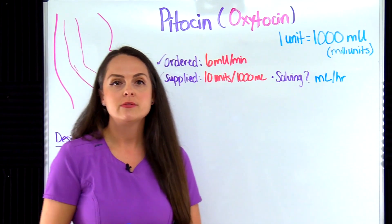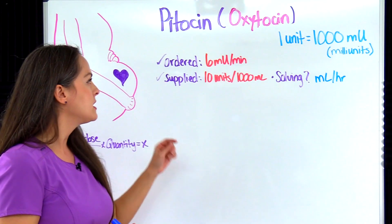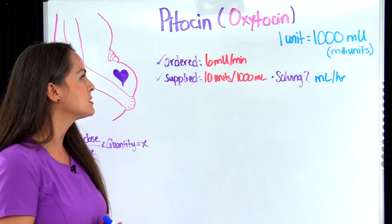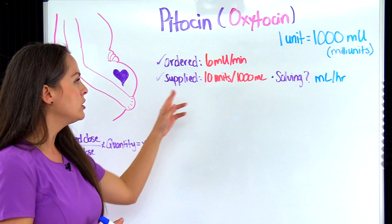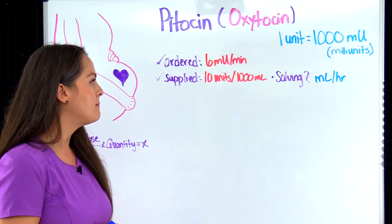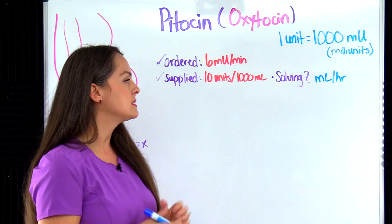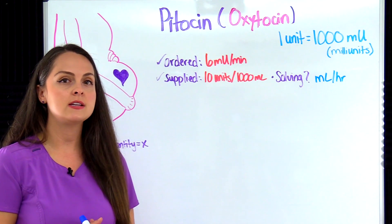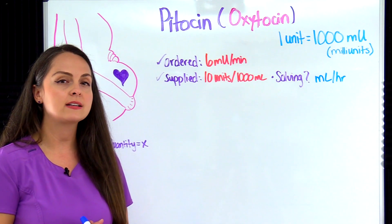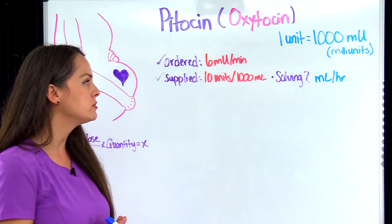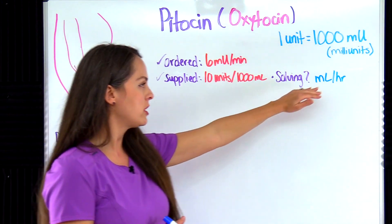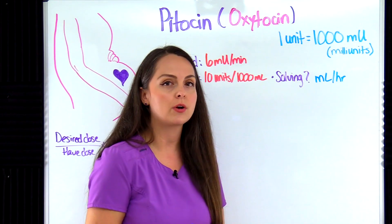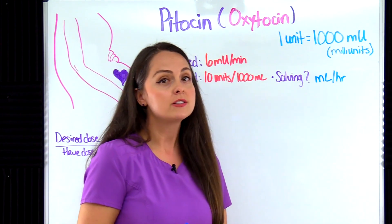Here we have a patient who is receiving Pitocin at six milliunits per minute. You're supplied with a bag that reads 10 units per 1000 mLs in lactated Ringer's solution, and you're trying to determine the milliliters per hour.